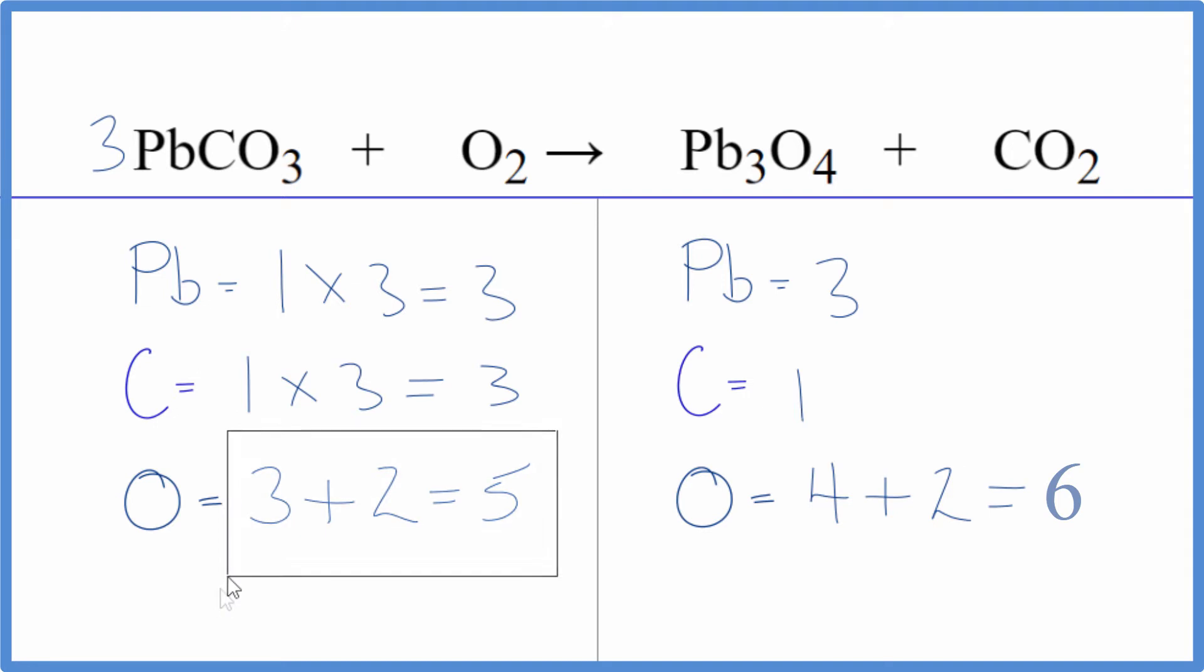Let's update the oxygen atoms. So we have 3 times 3. That's 9. Plus the O2 here. That's 2. So we have 11. Let's put a 3 here. That'll balance the carbons. 1 times 3. That's balanced.